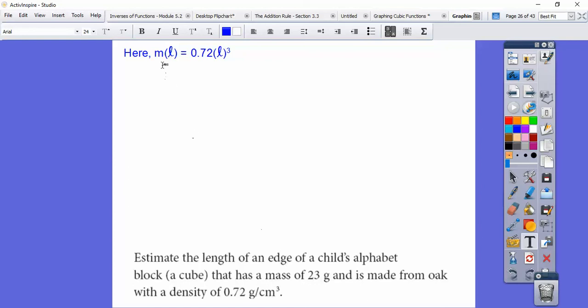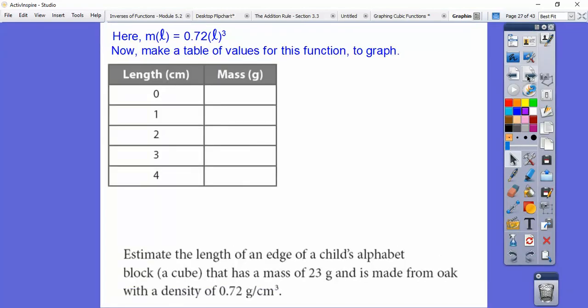Before we graph it, we've got to make a table of values. We're going to plug all of these numbers in for the length and cube it and then multiply it times 0.72. That's going to give us the mass with respect to the length. That's going to give us the mass, and then we'll graph them. This will be our x-axis, this will be our y-axis. It's always in alphabetical order, x comma y.